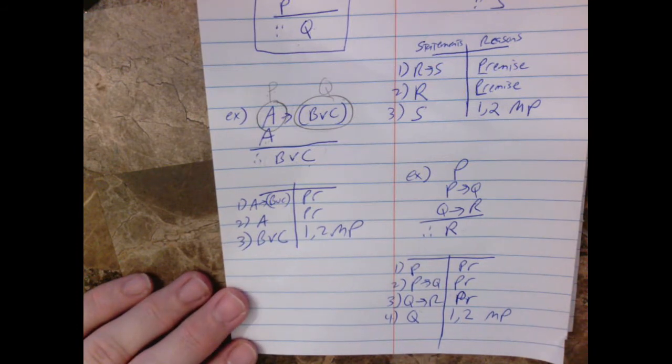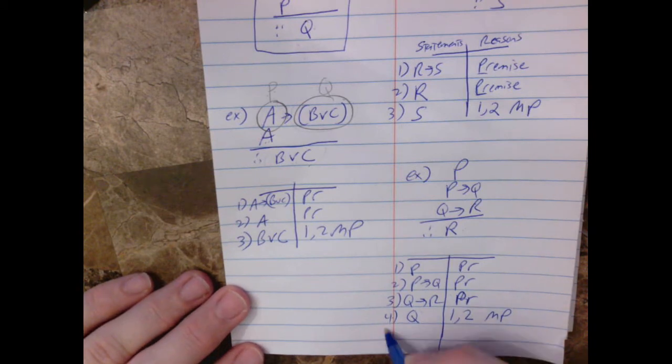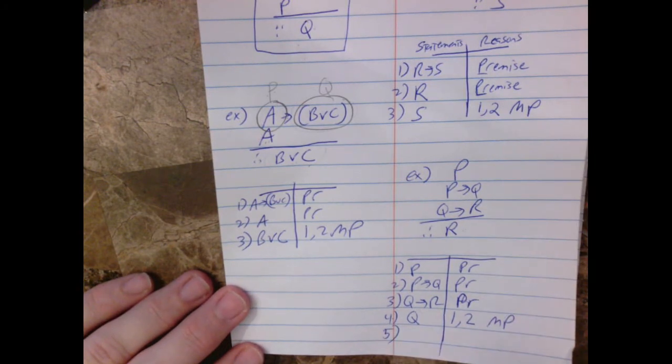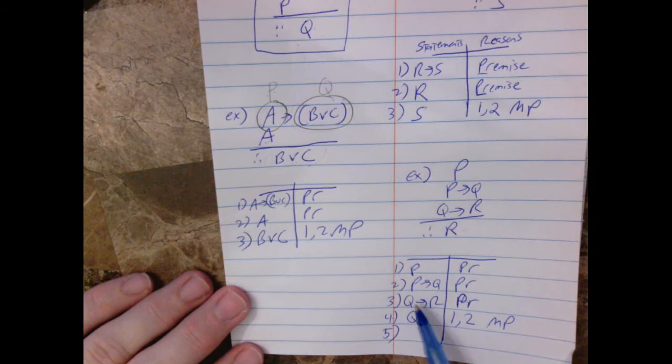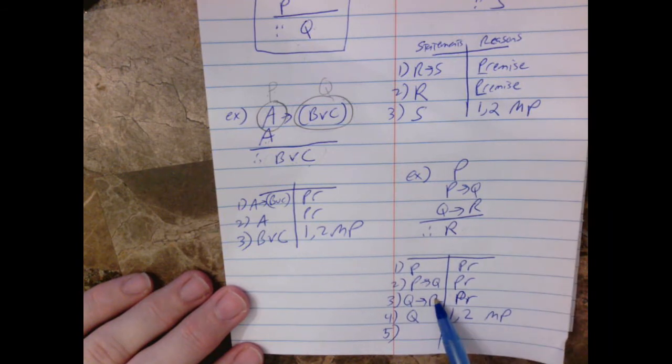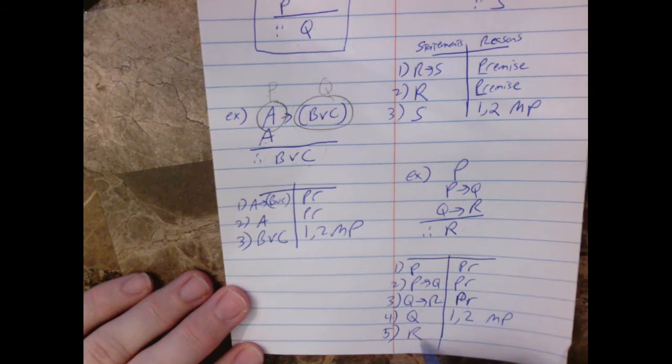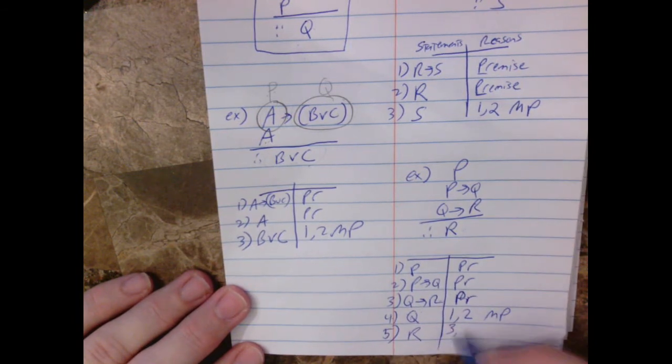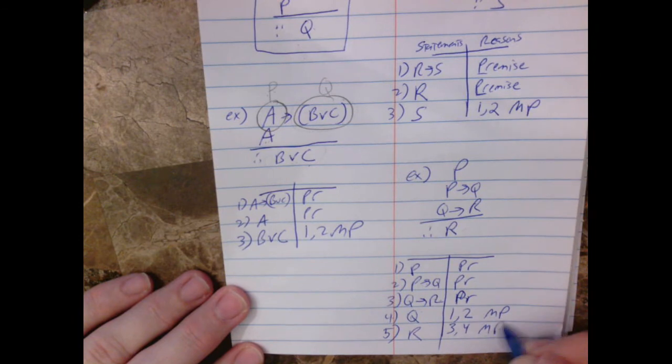So now that we have Q, what can we conclude? Well, looking at steps three and four, if we have Q implying R and we have Q, therefore R. That's using steps three and four. And that is also using modus ponens.